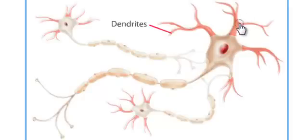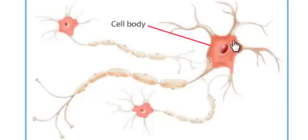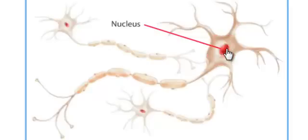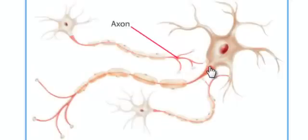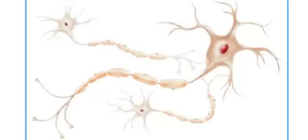Let's take a look at the parts of a neuron. First we have the dendrites, and the dendrites are connected to the cell body. The cell body is where the nucleus resides. Attached to the cell body we have the long part of the neuron called the axon. And then at the end of the axon we have these small little buttons called the axon terminals.